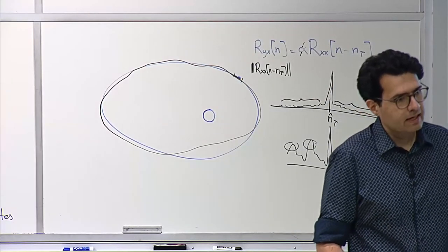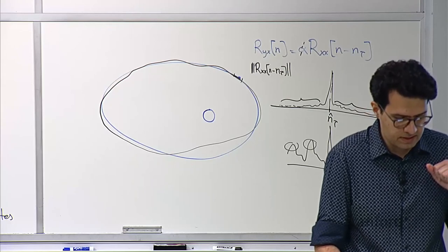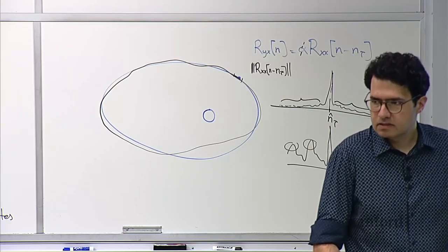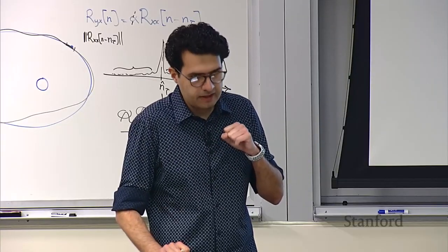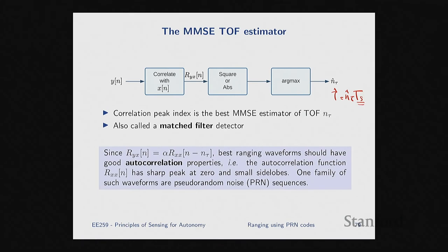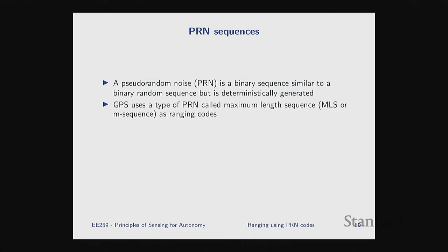It turns out the ranging codes GPS uses are exactly chosen according to this criterion. There is a family of waveforms called pseudorandom noise (PRN) sequences with very good autocorrelation properties. The specific ones GPS uses are called maximal length sequences (MLS or M-sequences). They have excellent autocorrelation properties, and they are very easy — almost free — to generate using a simple linear feedback shift register with n bits, producing a code of length 2^n - 1. This explains why GPS ranging codes like CA have lengths that are multiples of 1023 (since 2^10 - 1 = 1023, using a 10-bit shift register).